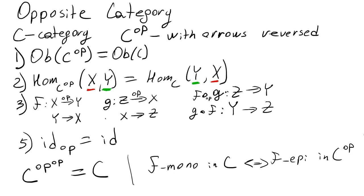Whenever we come up with a name for a concept but don't have a good name for the dual concept, we might just call it a co-something. You've probably heard of this. Co-things are very ubiquitous in category theory.